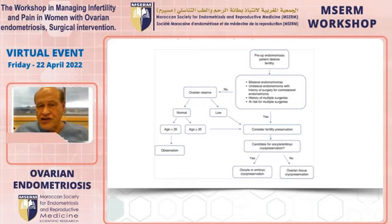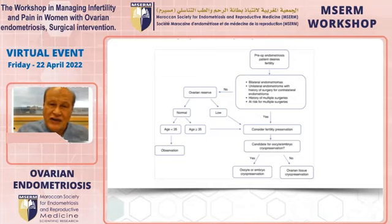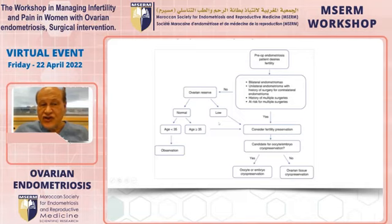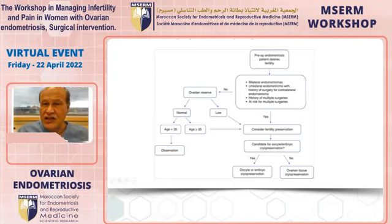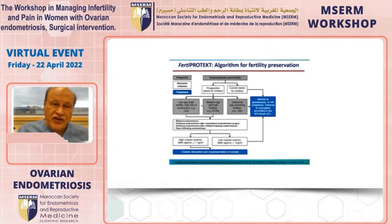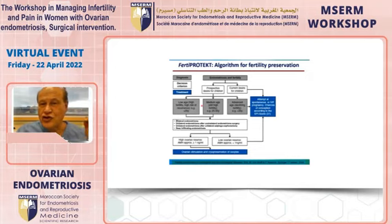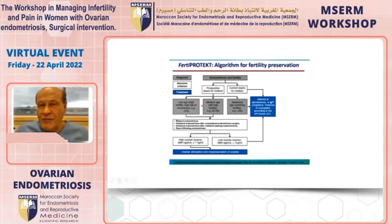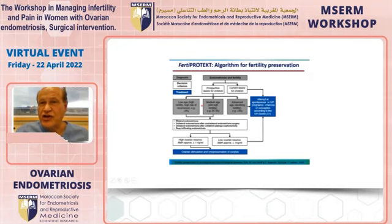For patients with bilateral endometriomas or prior surgery, proceeding immediately to fertility preservation is advised. Without those risk factors, ovarian reserve should be assessed: if low, fertility preservation is recommended; if normal, observation may be considered since these patients may conceive spontaneously. An alternative view suggests that for younger patients with low AMH, freezing is appropriate, but the patient's social readiness for immediate conception should also be considered before recommending fertility preservation over attempting pregnancy.